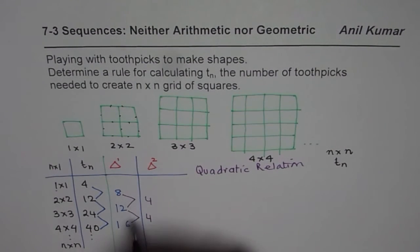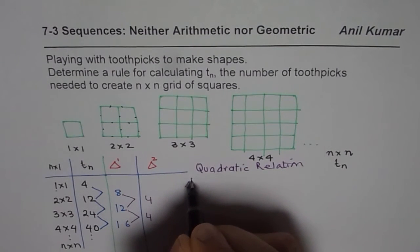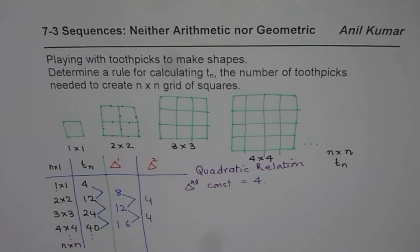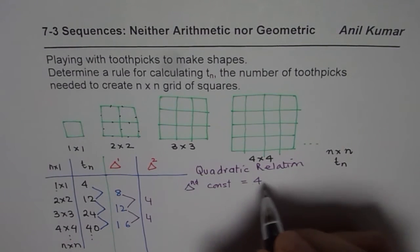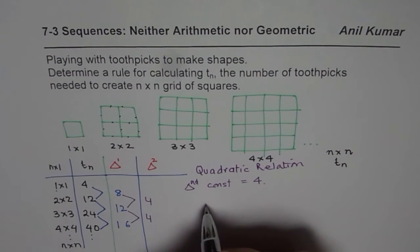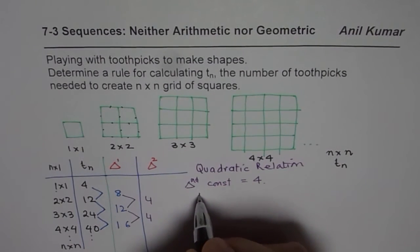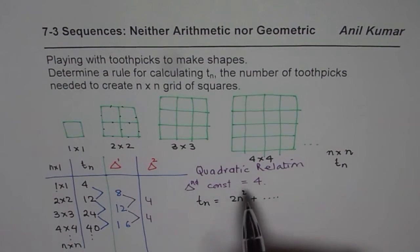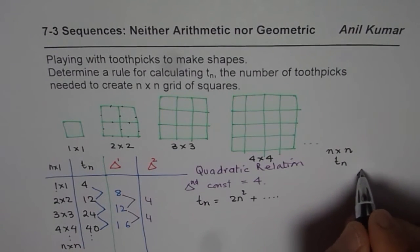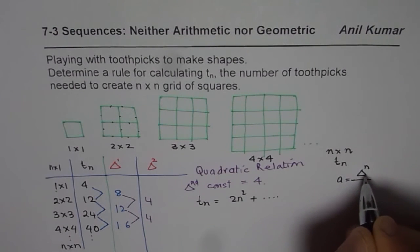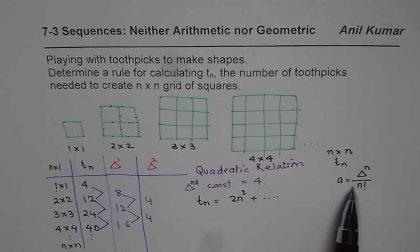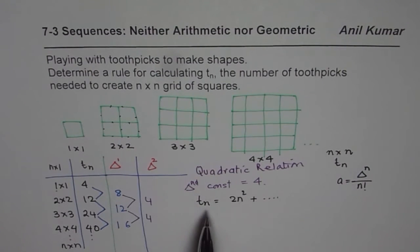If the second difference is constant and we found this is equal to four, what can be the equation? Well, if the second difference is constant we definitely know that this relation should involve two n square, half of four. That means tn involves two n square plus something which we don't know. In general, for any polynomial, if nth difference is constant then the leading coefficient is this divided by n factorial. If the second difference is constant, then a is half of that number.